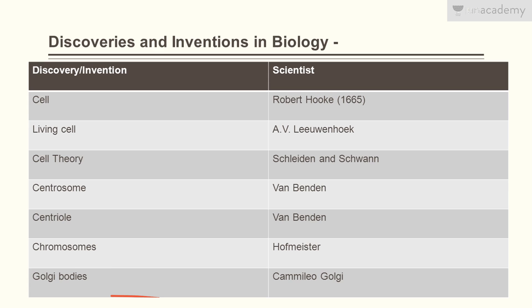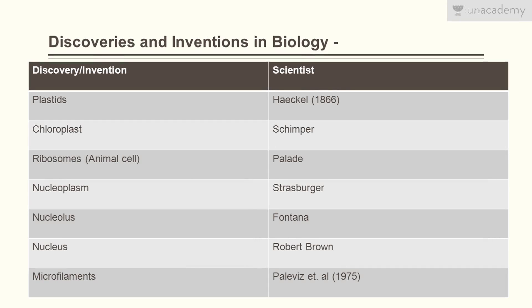Golgi body — as is clear from the name itself — was discovered by Camillo Golgi. Plastids were discovered by Haeckel in 1866. Chloroplast was discovered by Schimper.